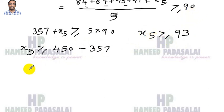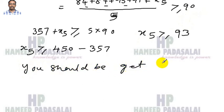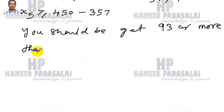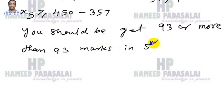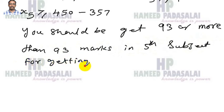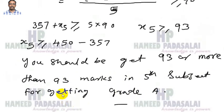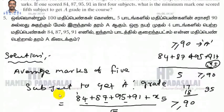So you should get 93 or more than 93 marks in the 5th subject for getting grade A. This is the answer for sum number 5. Thank you.